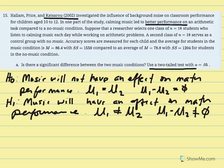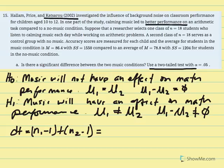To test significance we need to find our critical t value. Degrees of freedom equals n1 minus 1 plus n2 minus 1. Each sample had 18 individuals, so 18 minus 1 plus 18 minus 1 equals 17 plus 17, giving us 34 degrees of freedom.